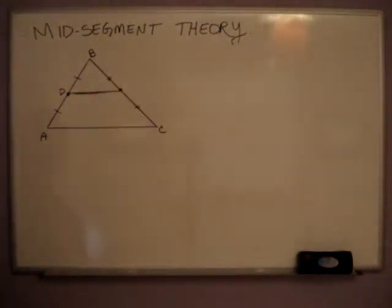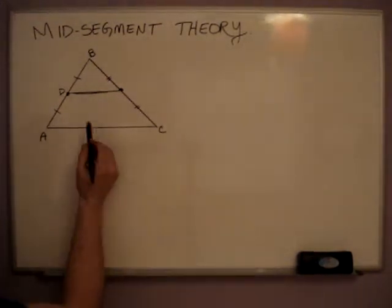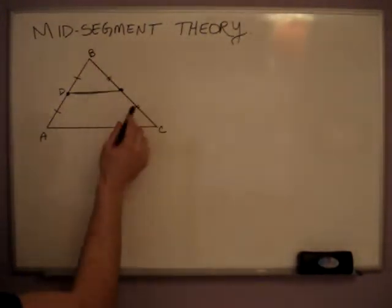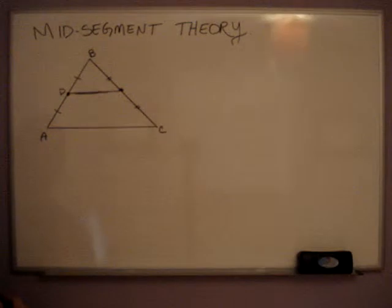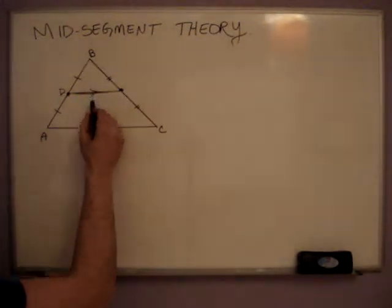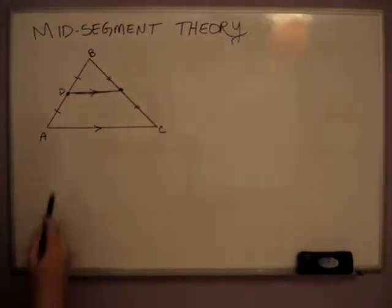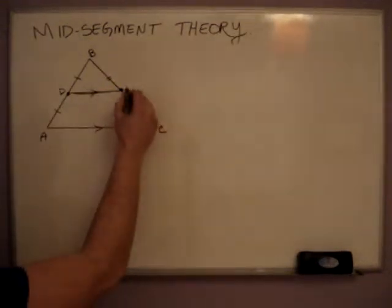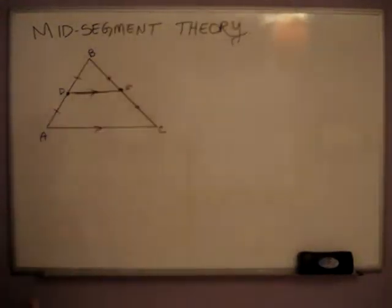And this line has some properties to it that makes it unique, so not only does it bisect the opposing lines in half, but it's actually parallel to the line right below it, so AC is congruent, and we'll label this E, to line segment DE.